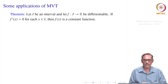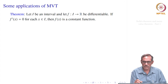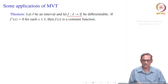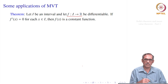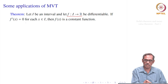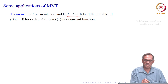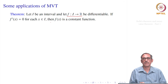The first application of the mean value theorem: suppose f is differentiable on an interval I and f'(x) = 0 for every x in I. Then f(x) is a constant function. We know the converse — a constant has derivative 0 — but this says the reverse: if the derivative is 0 everywhere on an interval, then f must be constant.